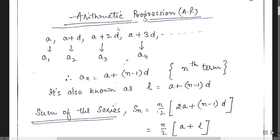What is the meaning of arithmetic progression? If the difference between the first and second term, second and third, third and fourth — all the terms in continuation — if the difference between these terms is the same, then it is arithmetic progression. If I subtract the first term from the second, second minus third, third minus second, and fourth minus third, the difference obtained should be equal. This type of series is known as arithmetic progression.